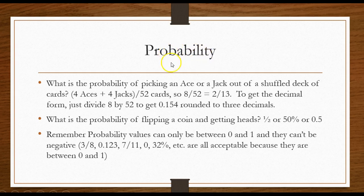All right, here's another one. What is the probability of picking an ace or a jack out of a shuffled deck of cards? There's four aces and four jacks, so that would be eight out of fifty-two, or the simplified form, two thirteenths. You may have to use the decimal form. You just divide eight by fifty-two to get point one five four.